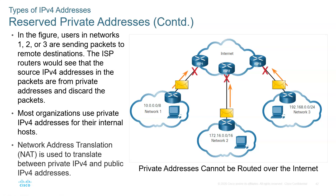There are also reserved IP addresses you cannot use. For example, 127.0.0.1 is the loopback address used to test that the TCP/IP stack is configured correctly. The network address — when the host portion of the IP is all zeros — cannot be assigned to a host because it identifies the network itself. And when the host portion is all ones, that is the broadcast address — the address used to send to everyone in your LAN.